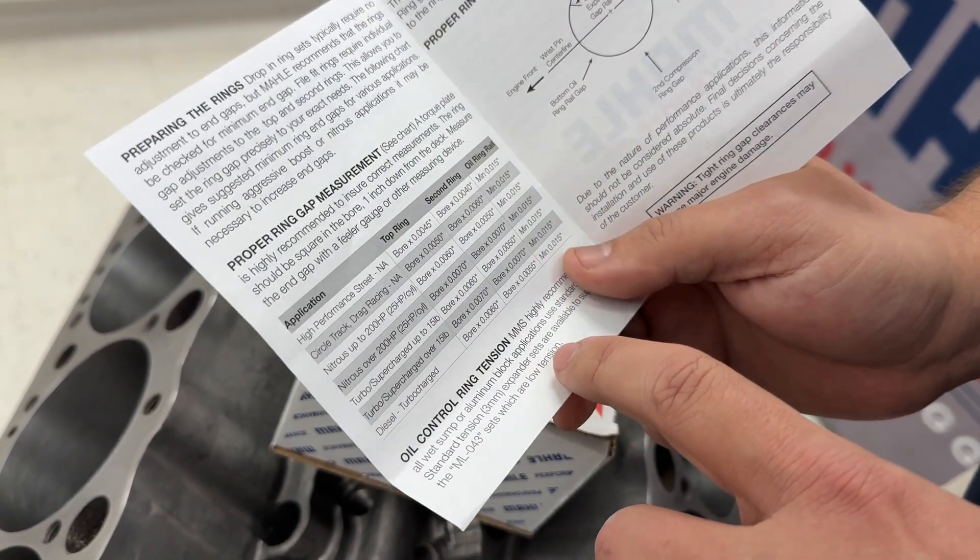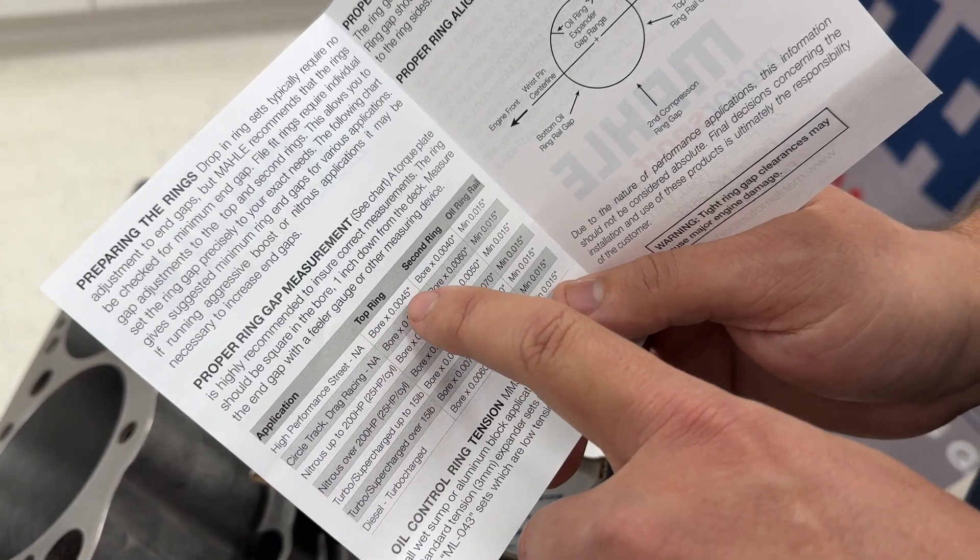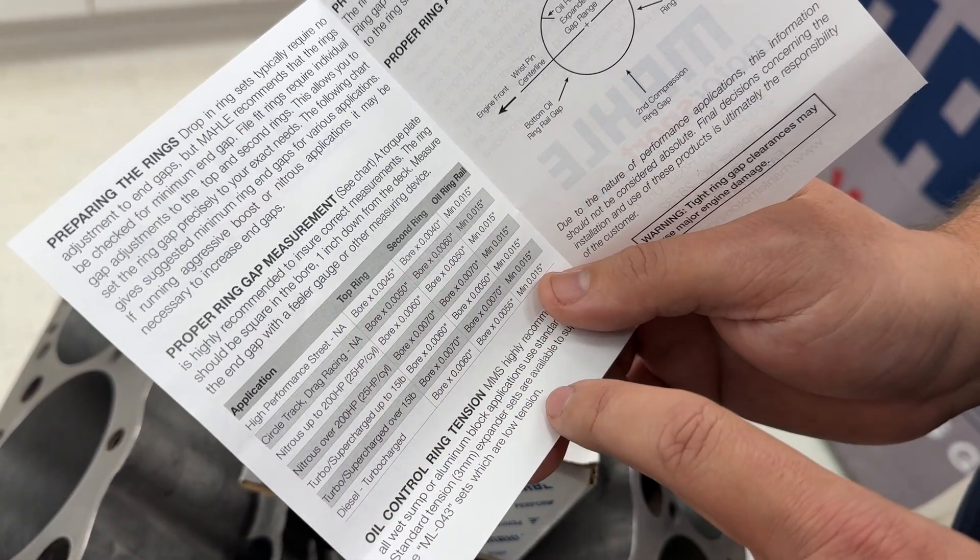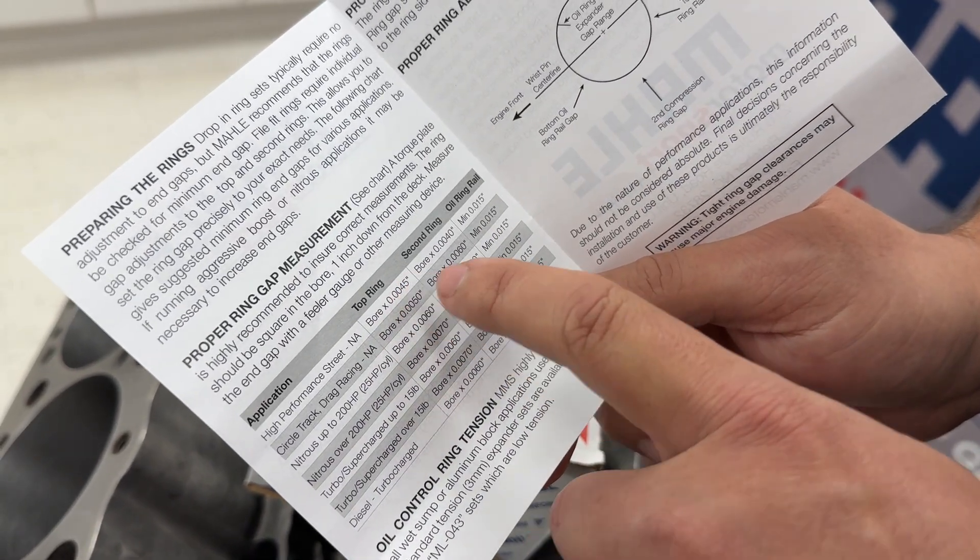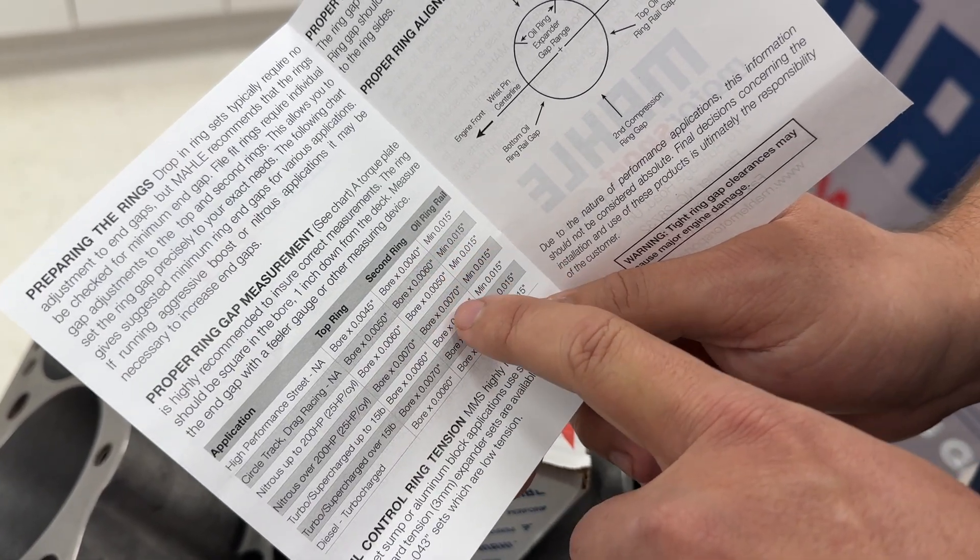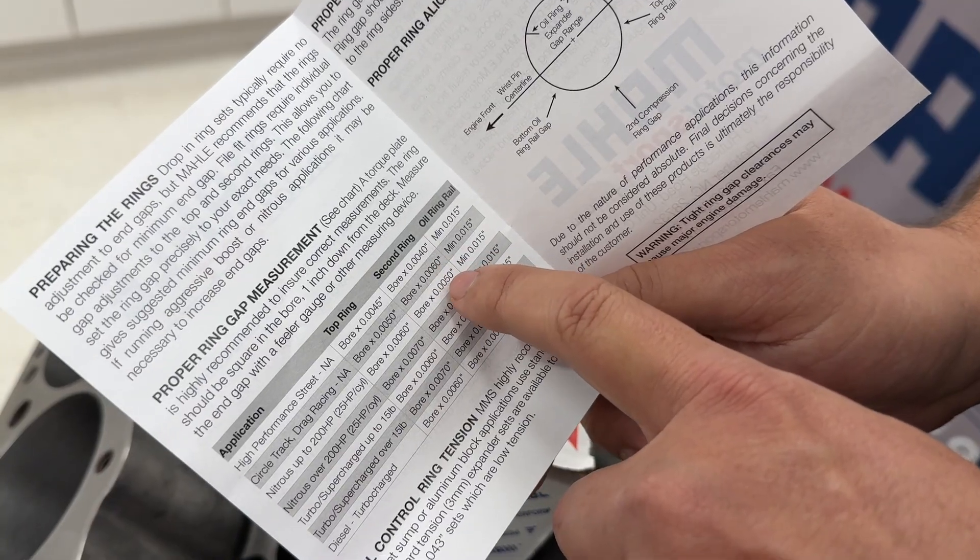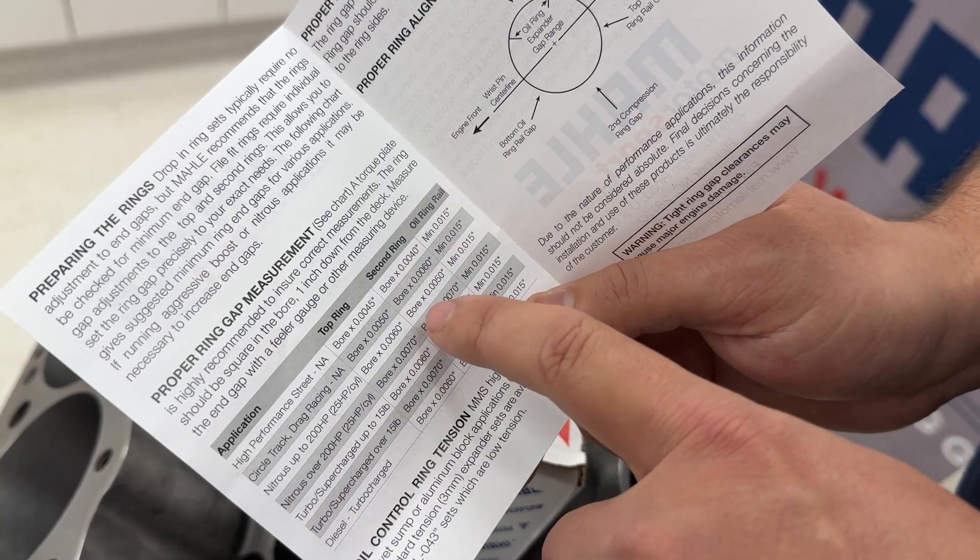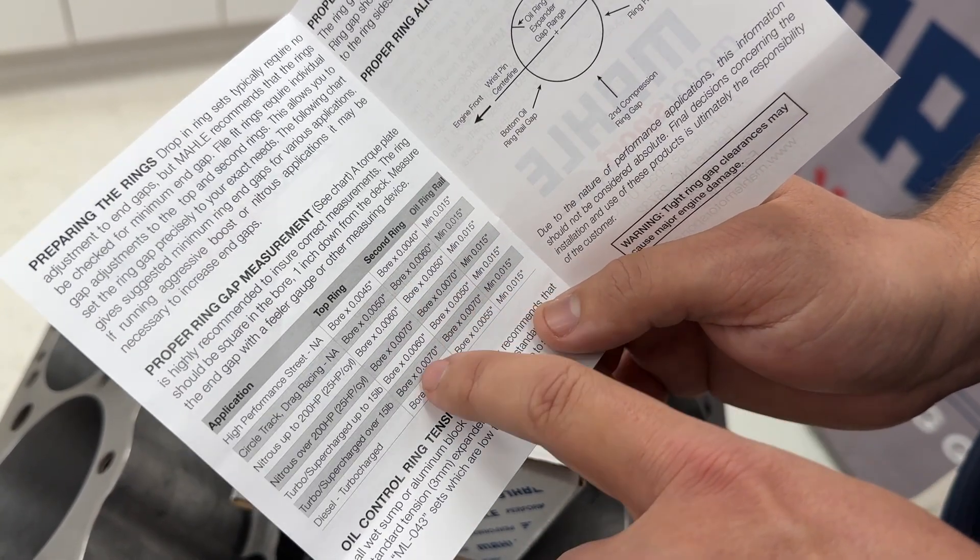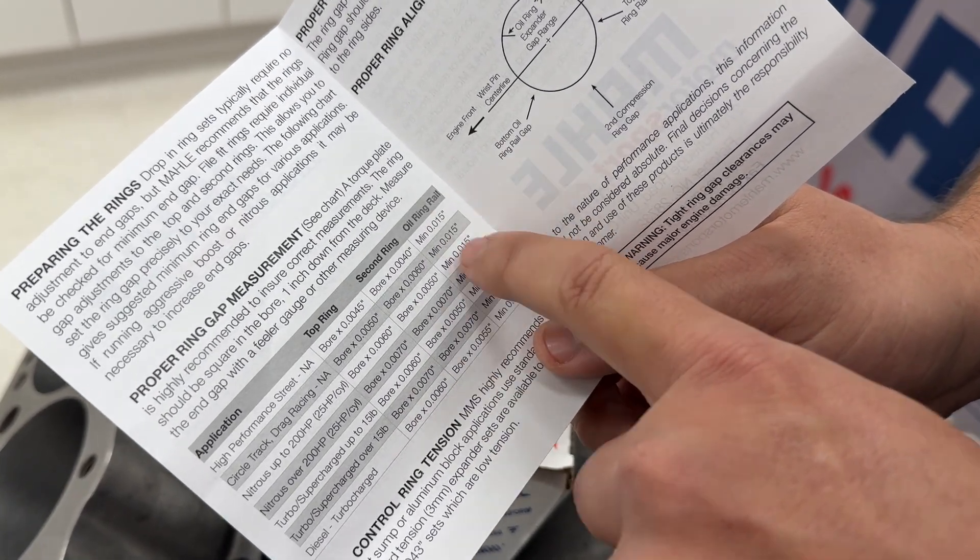So for example, if you have a four inch bore, you would multiply four times 0.0045, and that will tell us what our top ring end gap should be. Same for the second. And notice that the second in most instances is going to be a larger second ring end gap than the top. So that'll vary. Some of them, they're the same. And then we have our oil ring rail minimum gap.